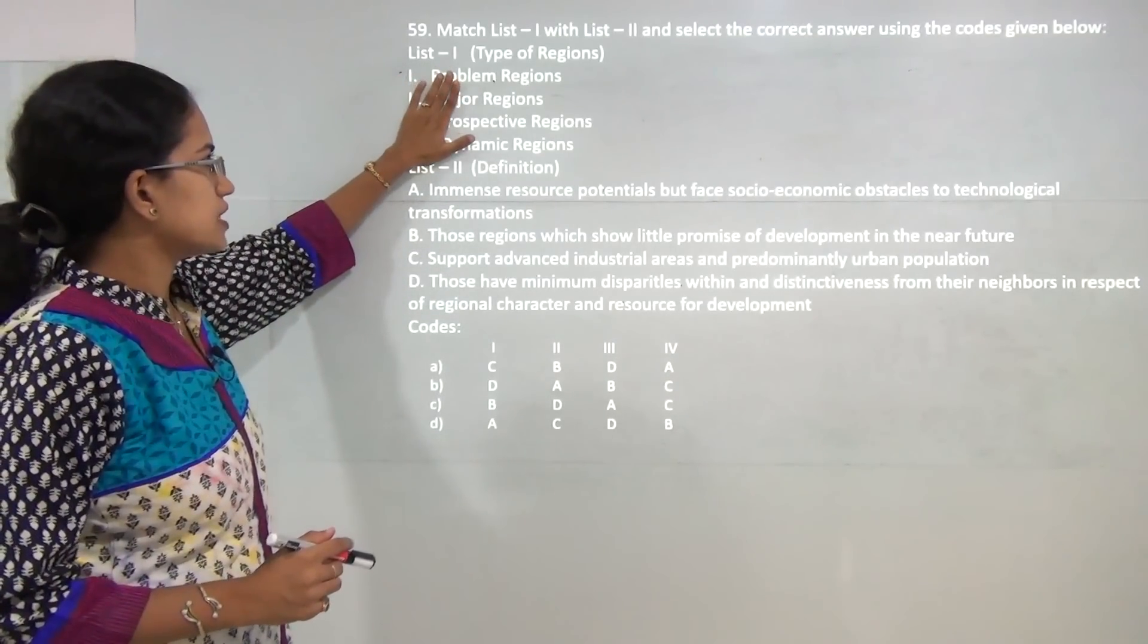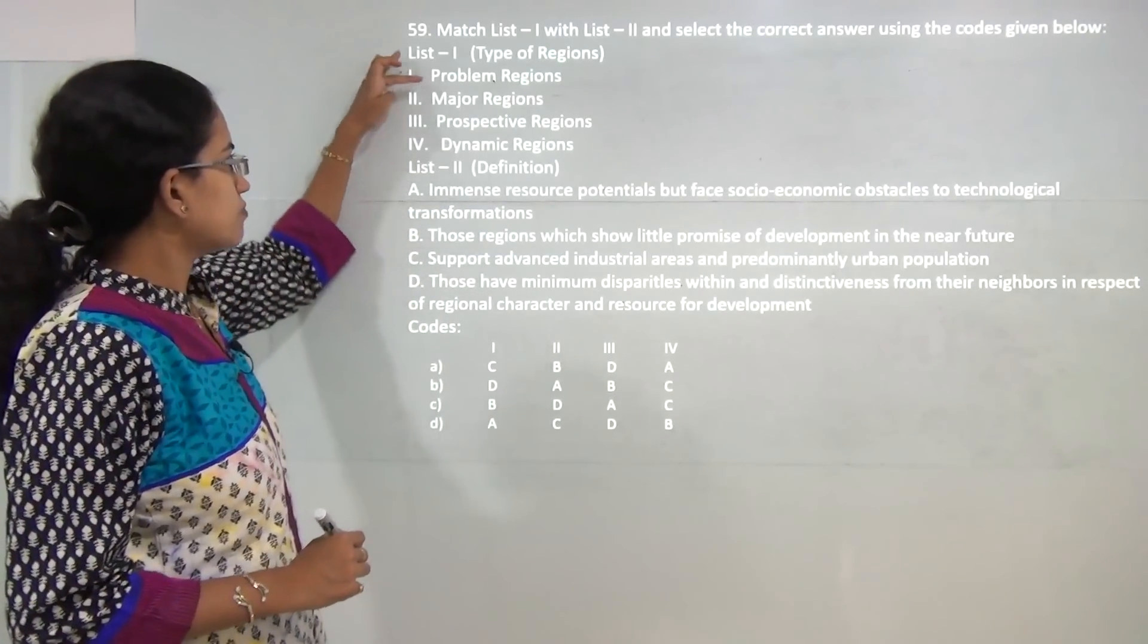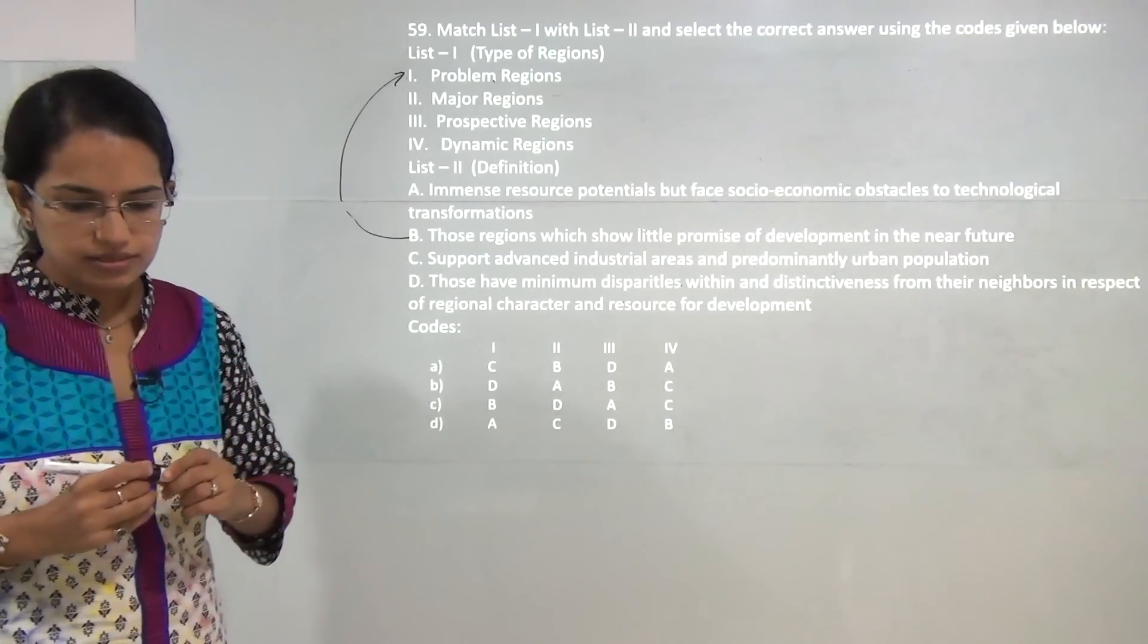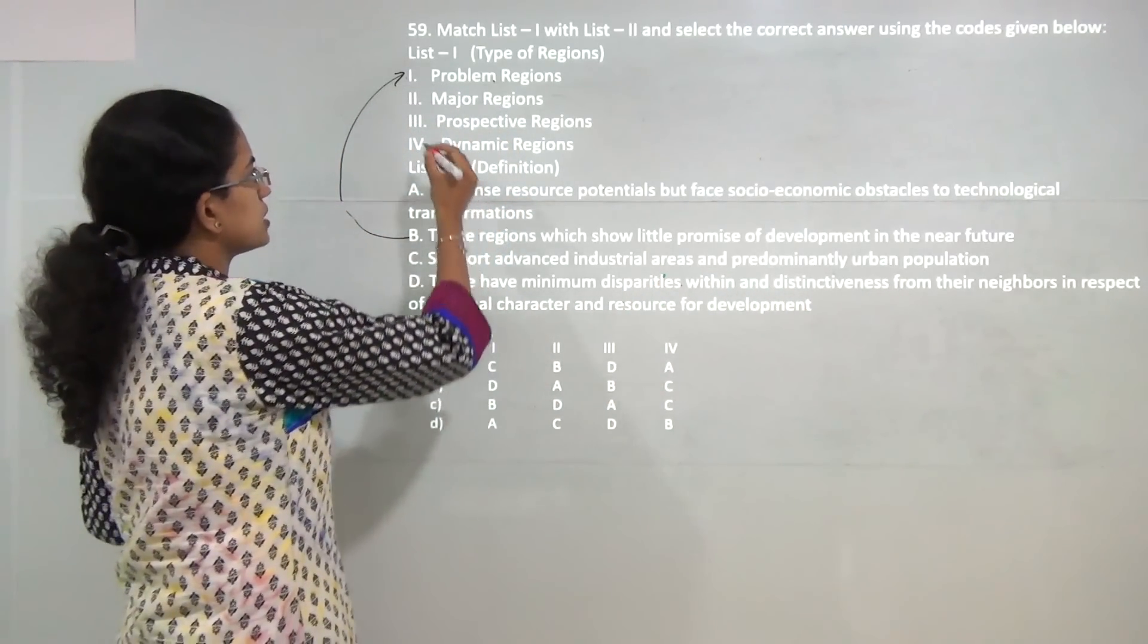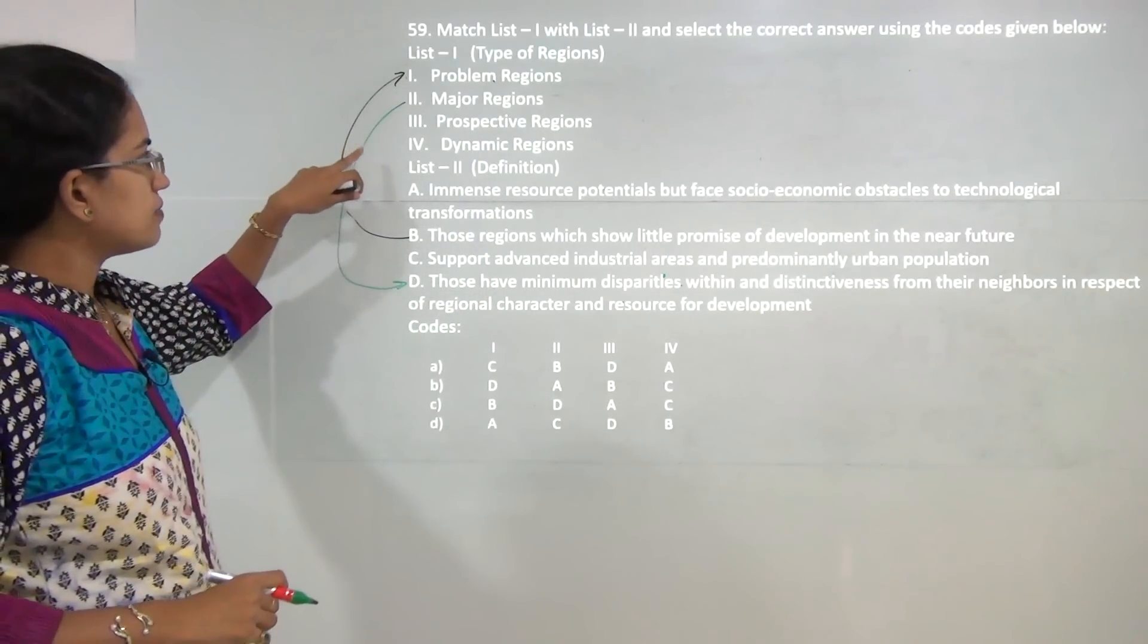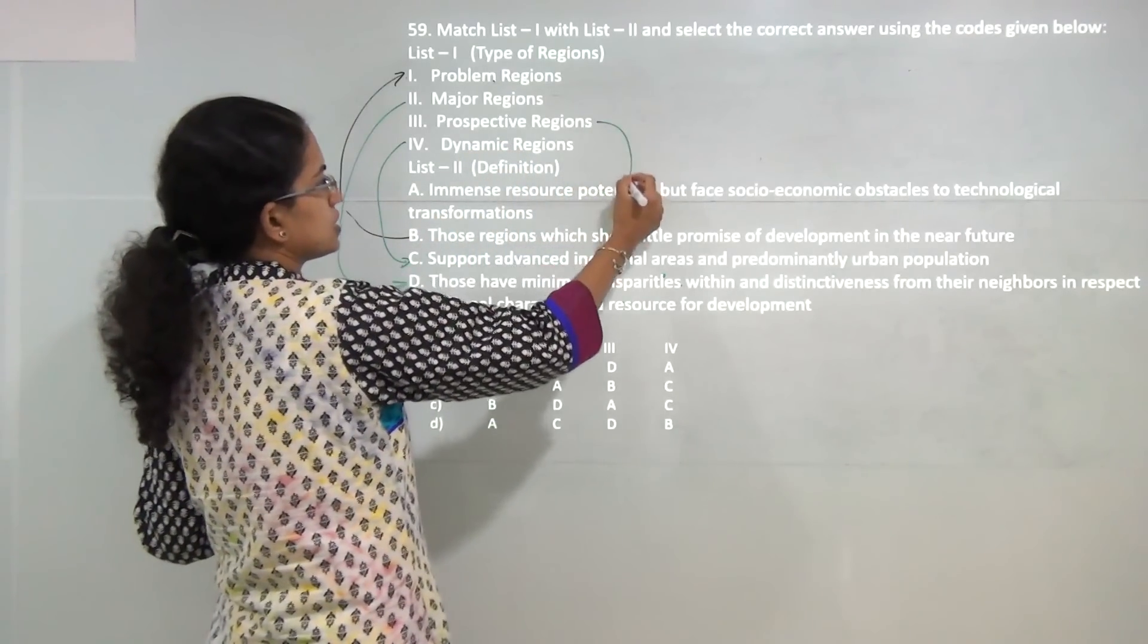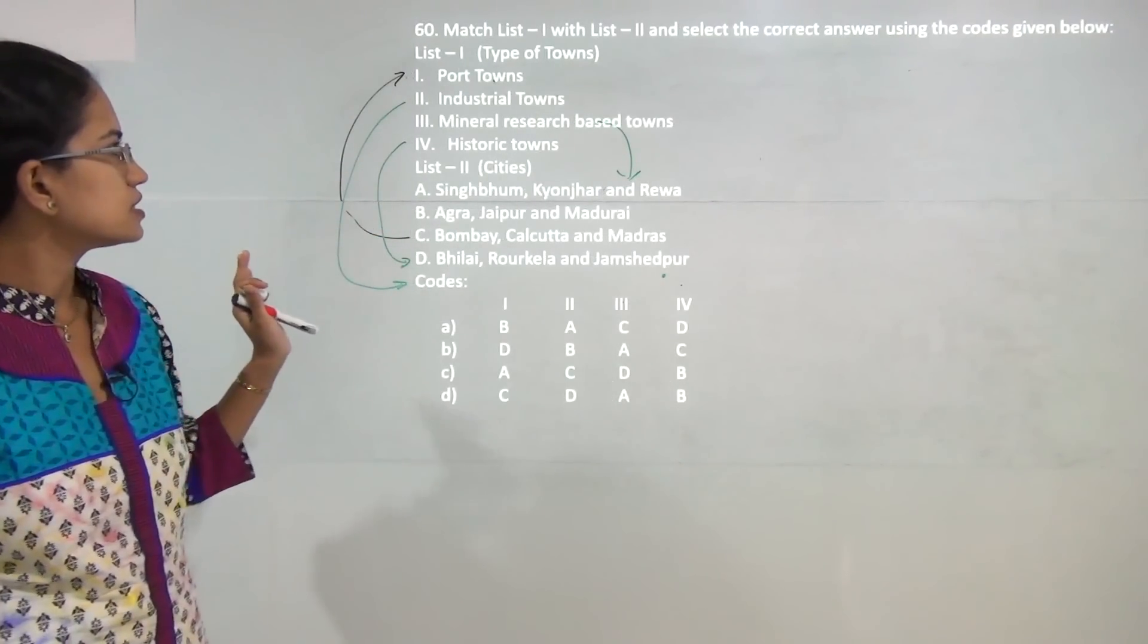Next, you have various regions of development and their definitions. Match the region with the correct definition. Problem regions show little promise for development in the near future. Major regions have minimum disparities within the region. Dynamic regions support advanced industrial areas and urban population, and prospective regions have potentials for future growth. These would be the correct matches for the regions and their definitions.